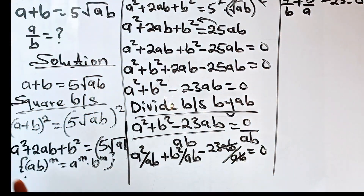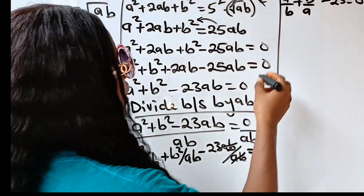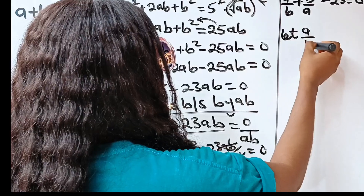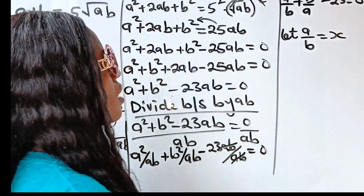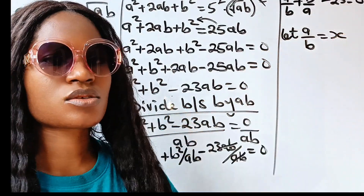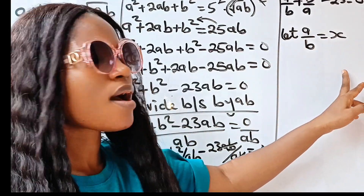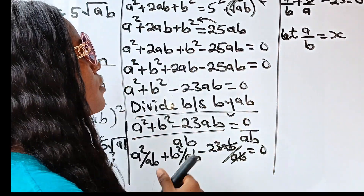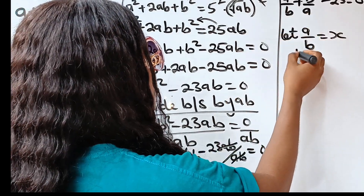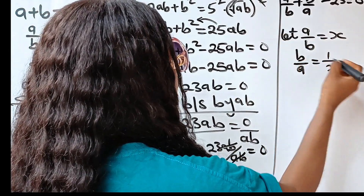Now, at this point, let A over B be equal to X, so that we can simplify and solve further. If A over B equals X, then B over A is equal to 1 over X.